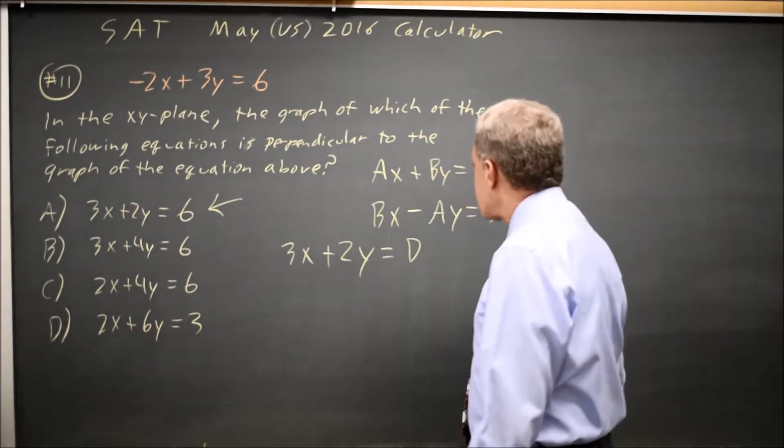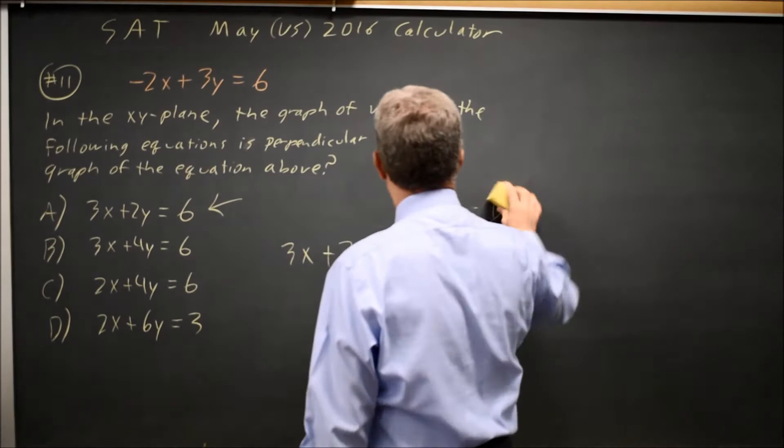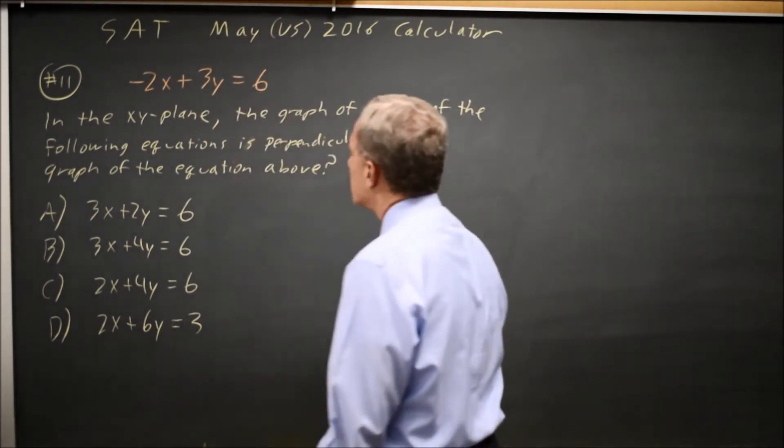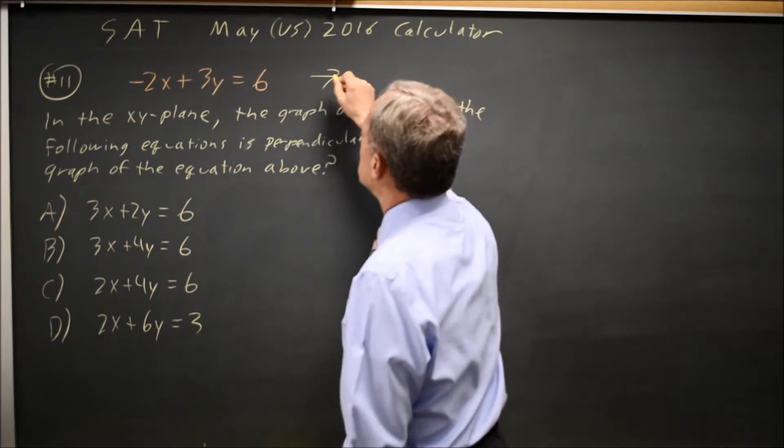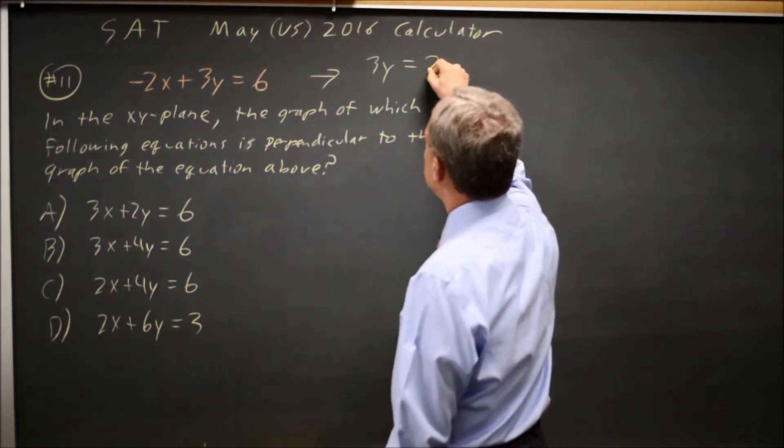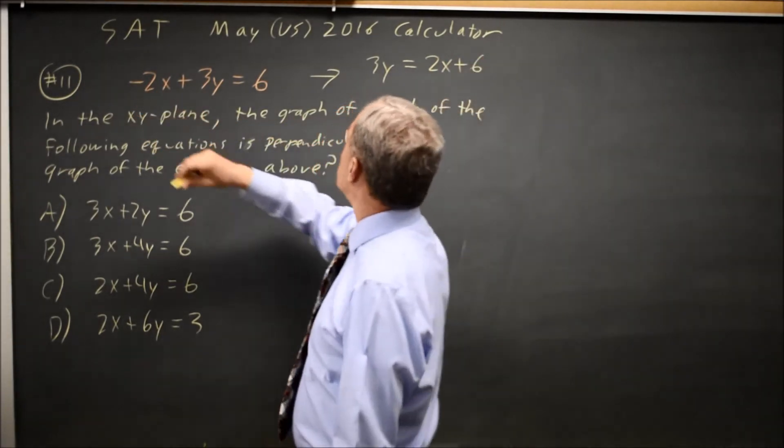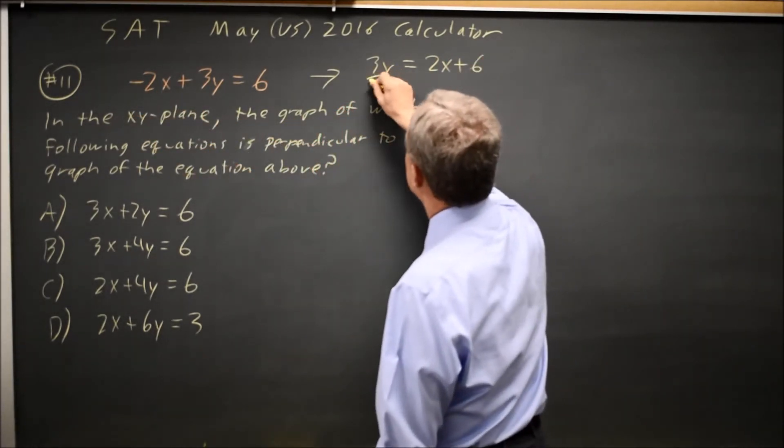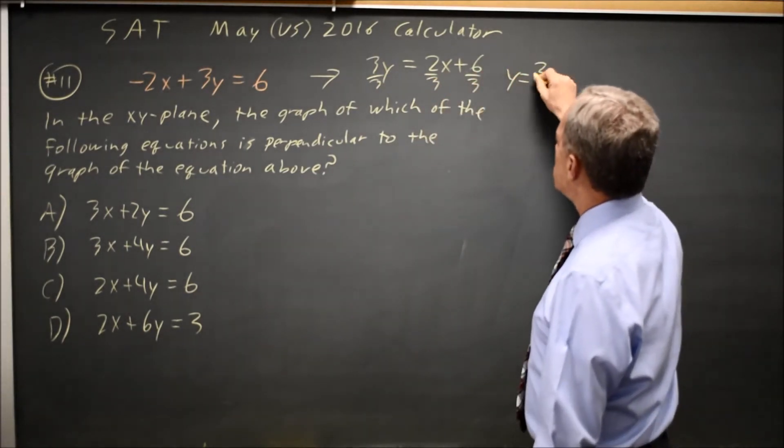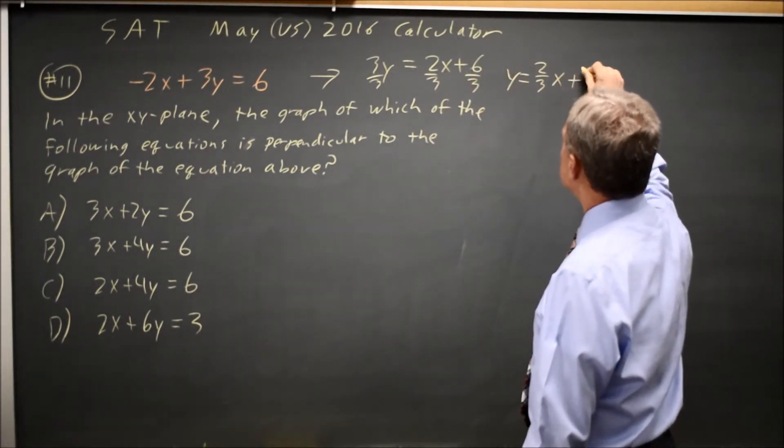If you don't remember that, or if you never saw it in your algebra classes, there's another option. Put this in slope-intercept form. 3Y equals 2X plus 6 if you add 2X to both sides, and then divide through by 3.